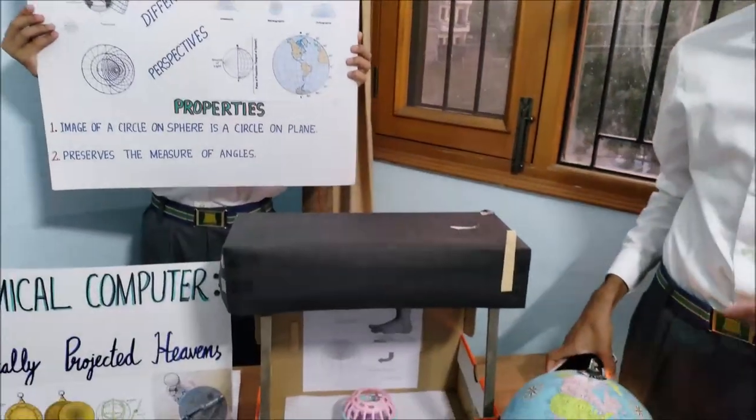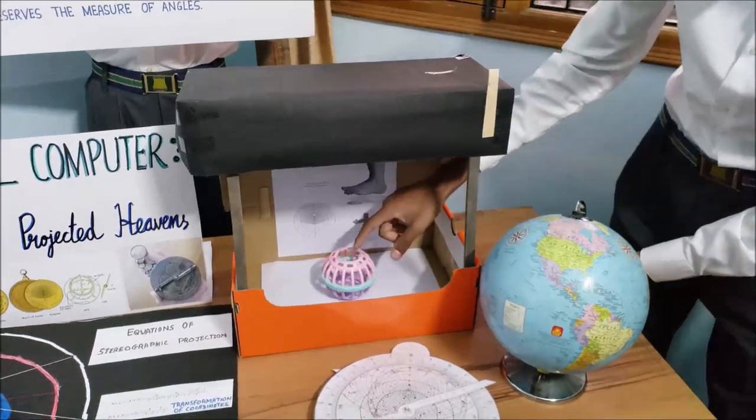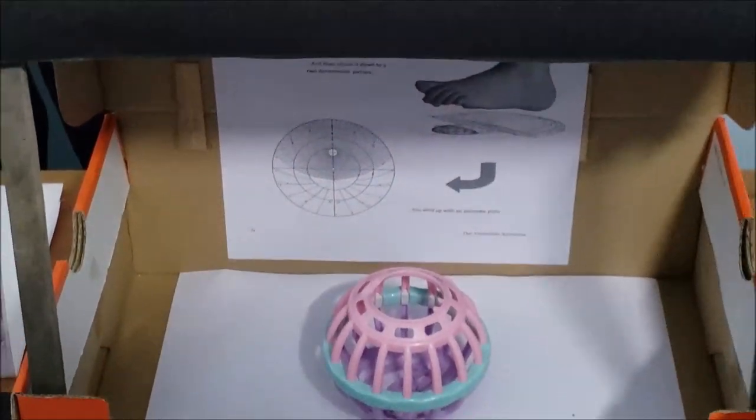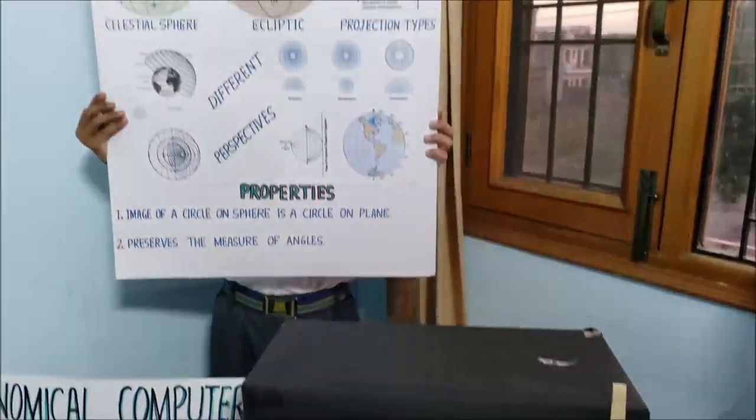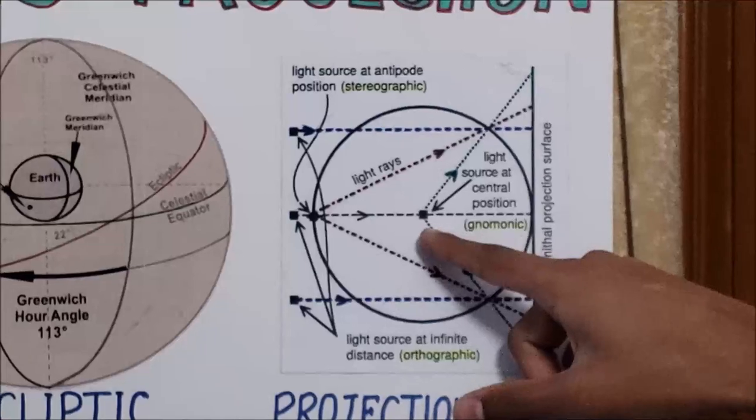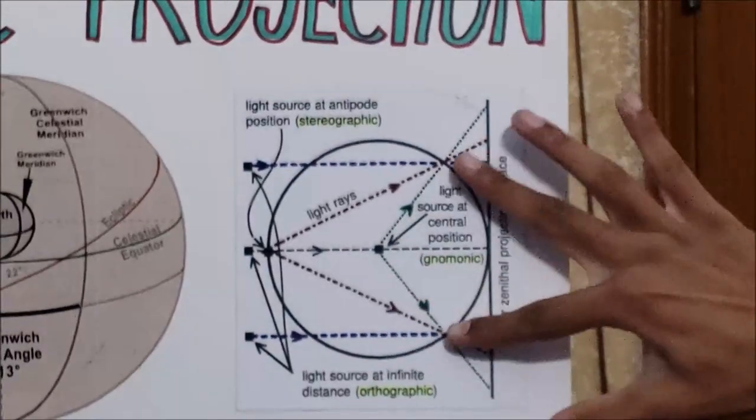Now the second type of projection is a gnomonic projection when the source of light is kept at the center of the sphere. The shadow that will be created from this is going to be a gnomonic projection. Now as you can see in the chart when the point of projection is at the center this creates a projection like this.